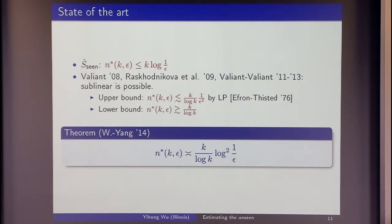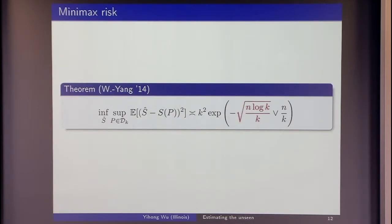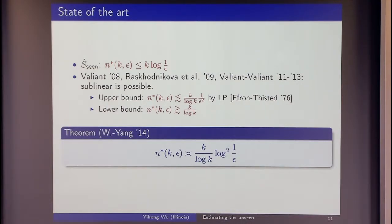What I will show is that you can get the best of both worlds, roughly speaking. You can achieve sublinear k/log k, and instead of 1/ε² dependence, which is polynomial, you get polylogarithmic — specifically log²(1/ε). This is actually sub-exponential concentration: the tail behaves like e^{−√something}. Indeed, looking at minimax risk, the term giving square root of log comes from exponential square root behavior.